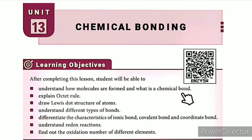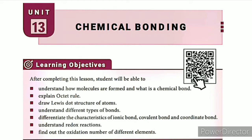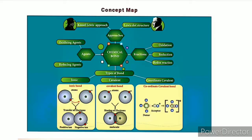Understand redox reactions and find out the oxidation number of different elements. This covers how molecules are formed, what is a chemical bond, and the octet rule. There is a QR code link and an ICT Corner link in the description box. Over the topic, there are one-word questions and a concept map for chemical bonding.